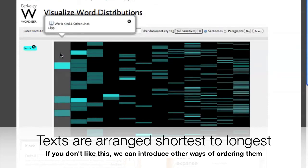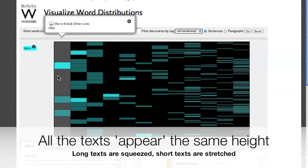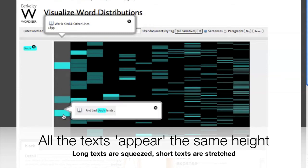But in each case, a single highlighted block represents 30 sentences. So the shorter documents have fewer blocks and the longer documents have more.